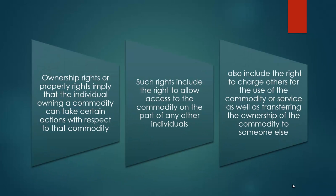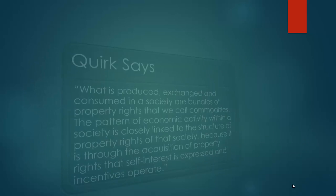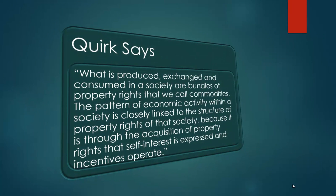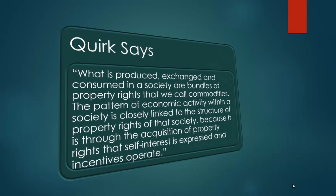Ownership rights or property rights imply that the individual owning a commodity can take certain actions with respect to that commodity. Such rights include the right to allow access to the commodity on the part of any other individuals, and also include the right to charge others for the use of the commodity or service, as well as transferring the ownership of the commodity to someone else. As Quirk says, what is produced, exchanged, and consumed in a society are bundles of property rights that we call commodities. The pattern of economic activity within a society is closely linked to the structure of property rights of that society, because it is through the acquisition of property rights that self-interest is expressed and incentives operate.